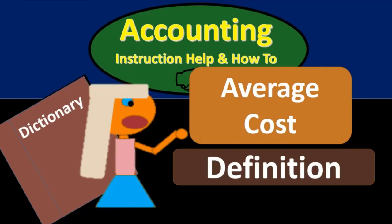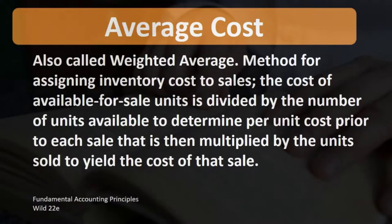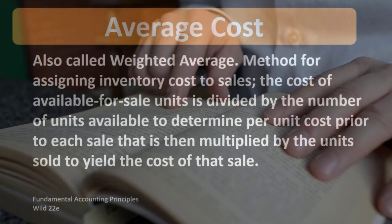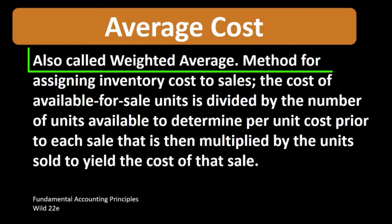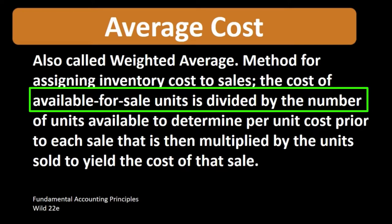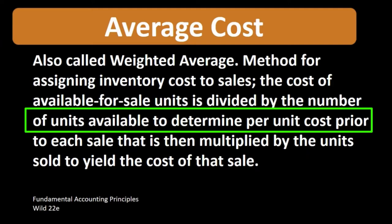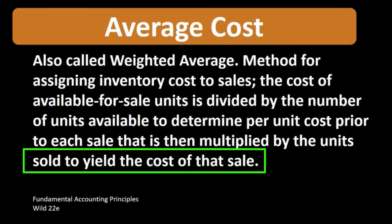Hello, in this lecture we're going to define average cost. According to Fundamental Accounting Principles Wild 22nd Edition, the definition of average cost — also called weighted average — is a method for assigning inventory cost to sales. The cost of available-for-sale units is divided by the number of units available to determine per-unit cost prior to each sale, which is then multiplied by the units sold to yield the cost of that sale.